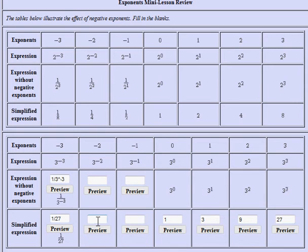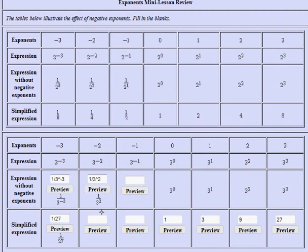If you fill these answers in: 3 to the negative 2 power is the same as 3 to the positive 2 power in the denominator, which is 1 divided by 3 to the second power. Simplified, that would be 1 divided by 9, since 3 squared means 3 times 3. And 3 to the negative 1 power would be written as 1 divided by 3, getting rid of the negative exponent by putting it in the denominator.